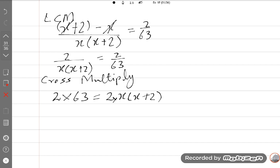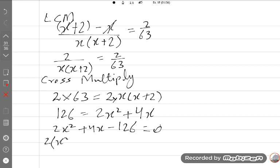So this is 126 equals 2X squared plus 4X. We will rearrange: 2X squared plus 4X minus 126 equals 0. Taking common factor 2, we get X squared plus 2X minus 63 equals 0.